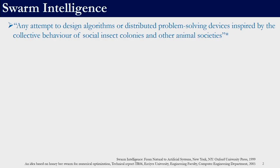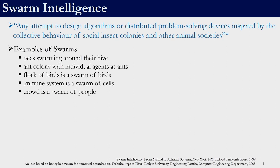Particle Swarm Optimization is a swarm intelligence technique. Swarm intelligence is defined as any attempt to design algorithms or distributed problem solving devices that are inspired by the collective behavior of social insect colonies and other animal societies. Particle swarm optimization gets its inspiration from the flocking of birds or what is called fish schooling. Some examples of swarms are bees swarming around their hive, ant colony with individual agents as ants, flock of birds, immune system as a swarm of cells, and a crowd as a swarm of people.